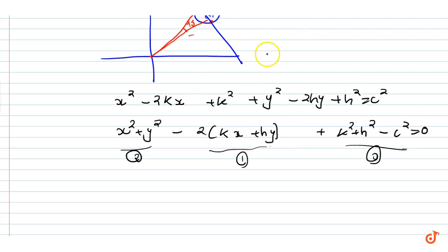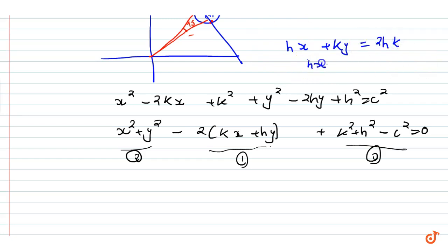We have a straight line equation. The straight line is hx plus ky equals 2hk. We can rewrite this as: hx plus ky divided by 2hk equals 1.